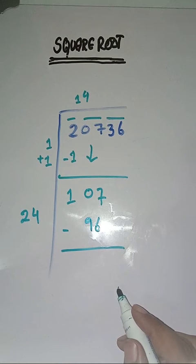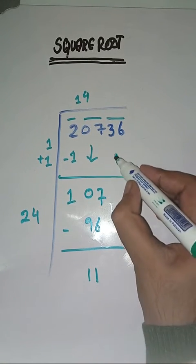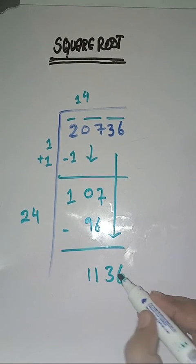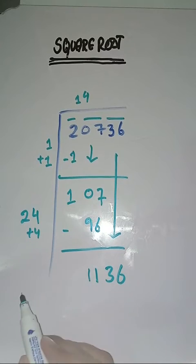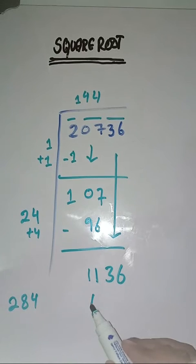Now we take the number four. Two-eighty-four fours are eleven thirty-six. So it's completely solved. The square root of 2736 is 144.